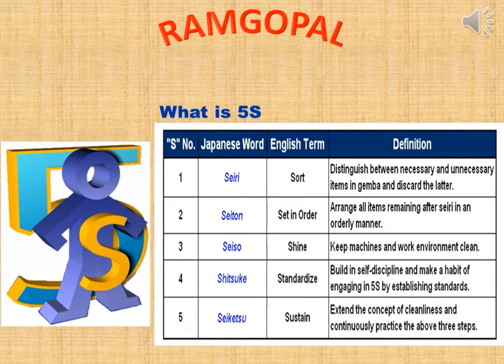Seiton — Set in Order: Arrange all items remaining after Seiri in an orderly manner. Seiso — Shine: Keep machines and the work environment clean.